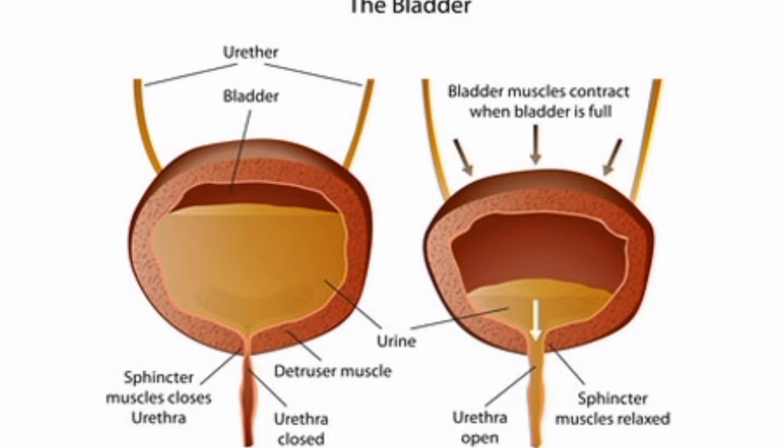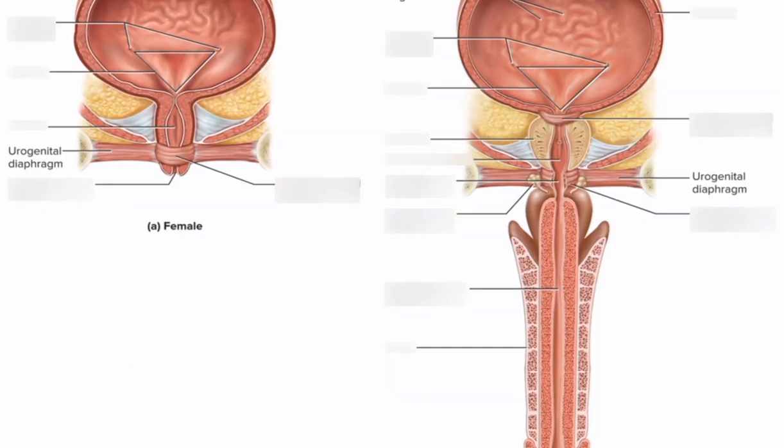The urethra is a passage for the urine to exit the body externally. The stored urine will be passed out of the body through the urethra, which is the external opening for the excretory system. The opening of the urinary bladder into the urethra is guarded by two sphincters. The urethra is 4 cm long in females and 20 cm long in males. Its opening is separate in females but is common with the reproductive tract in males. Hence in males, the urethra is also termed as the urinogenital tract.